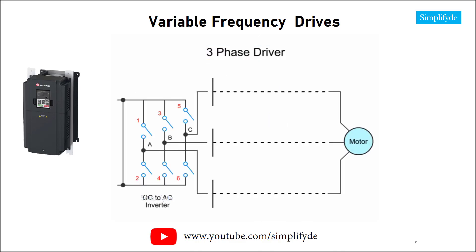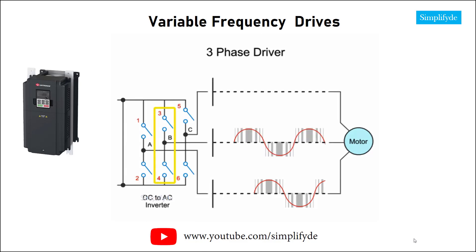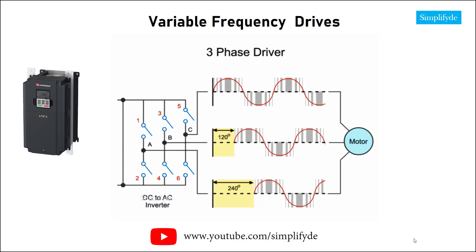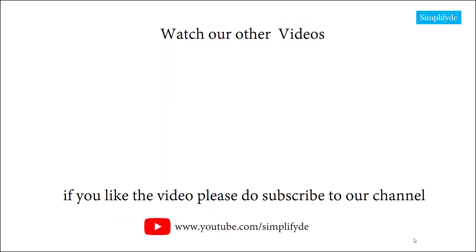In a three-phase drive, the sine waves produced by each pair of inverter switches are 120 degrees out of phase to ensure efficient operation of the motor.